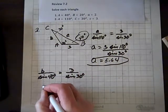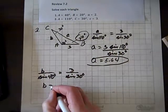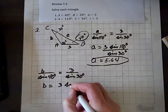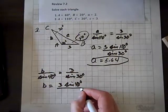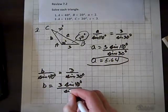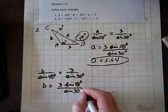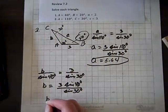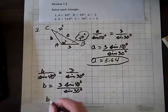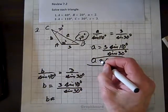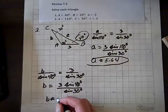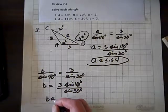Multiplying both sides by sine of 40 degrees, we get B equals 3 sine of 40 degrees over sine of 30 degrees. When I evaluate that, I get B equals approximately 3.86.